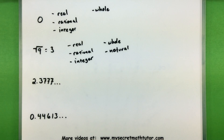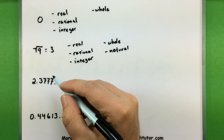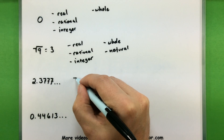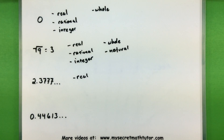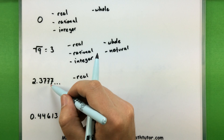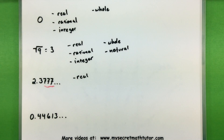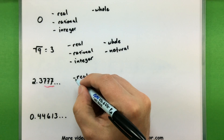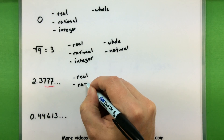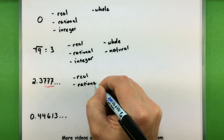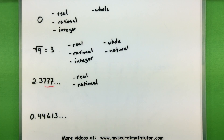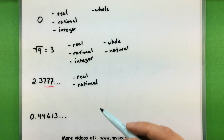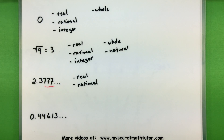When it gets to decimals, you're looking for a block of numbers that repeats over and over again to determine if it can be written as a fraction. Starting with a repeating decimal — always start with the largest group: it is a type of real number. This one looks like it goes 2.3 and then starts repeating sevens over and over again. Those repeated sevens help determine that yes, this can be written as a fraction, so it goes in the rational category. Is it an integer? No, so that's as far as this one goes — it's real and rational.